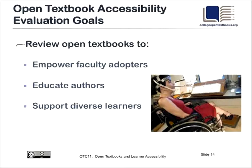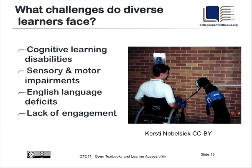This last summer, we worked with Virtual Ability to evaluate open textbooks. Our goals were to empower faculty adopters so they could make good choices around open textbooks — understanding how accessible a textbook would be for its students before selecting it — which helps support the diverse learners at community colleges and other higher ed institutions. A second equally important piece was the education of authors, because we want to help authors write open textbooks correctly the first time so that their wonderful resources are available for all learners.